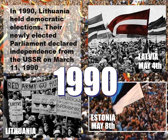Already the ball had been rolling. In 1990, Lithuania held democratic elections and their newly democratic parliament declared independence from the USSR on March 11th, 1990 — though this would not be finalized until 1991. Latvia followed on May 4th, Estonia on May 8th. The Soviets were not happy about this. We went from 15 republics to 12.